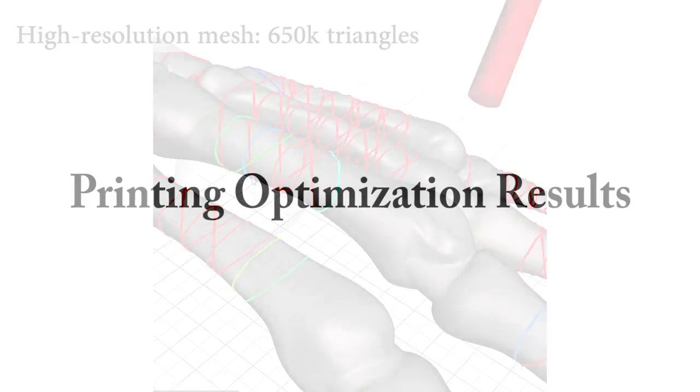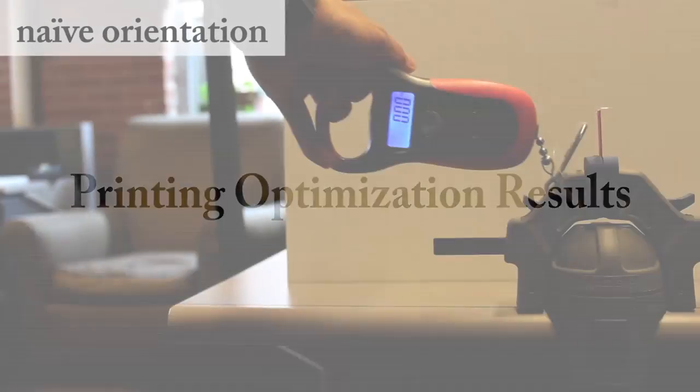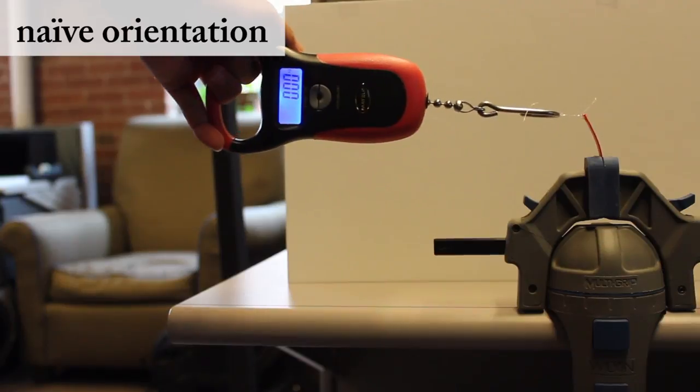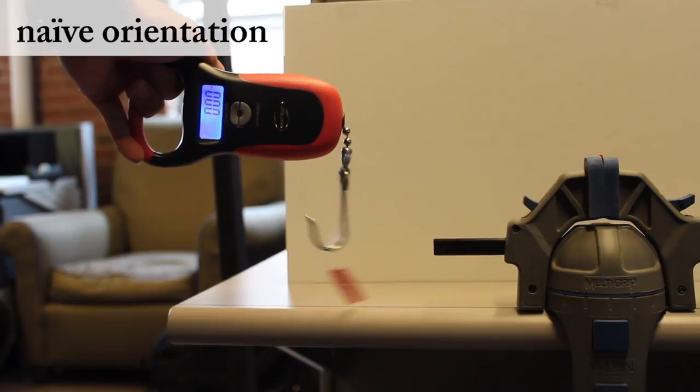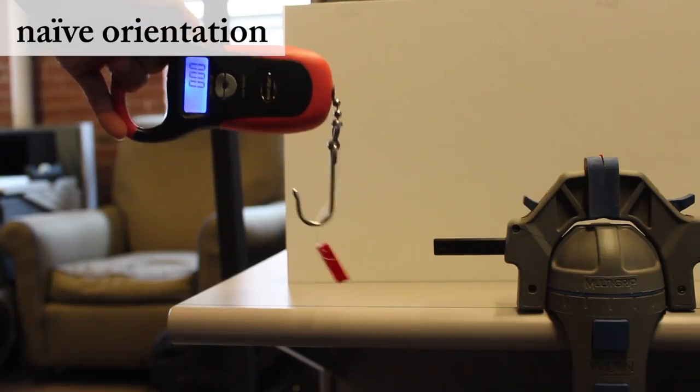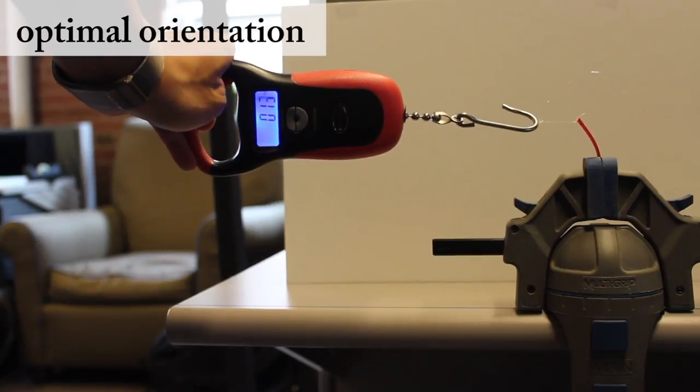We did various experiments comparing our optimized 3D printing orientation to a more conventional naive orientation. In this first test, we show that a thin beam oriented vertically, and hence printed with many small layers, breaks much more easily than the same shape printed in a horizontal orientation, which is then made of a few large rectangular layers.